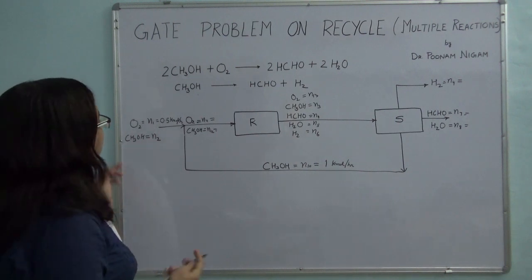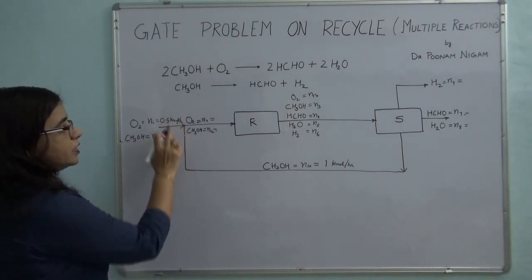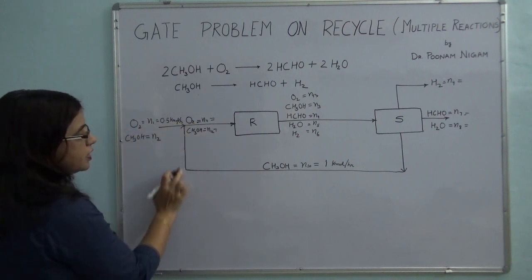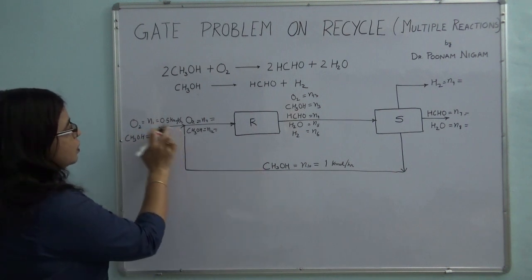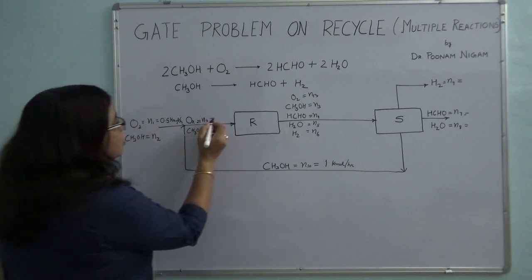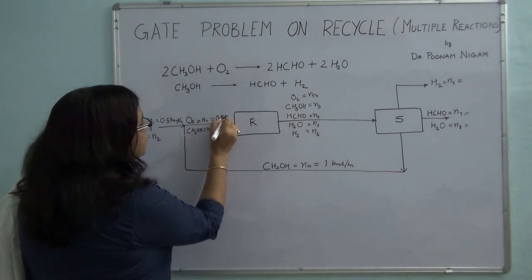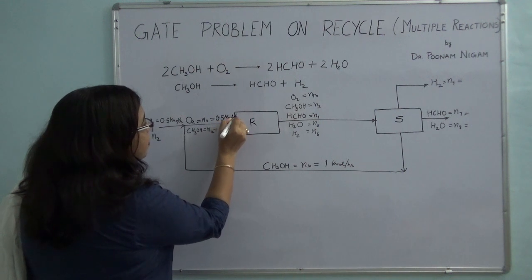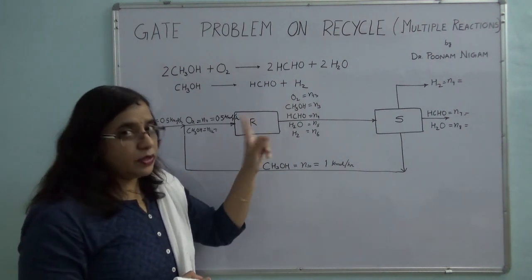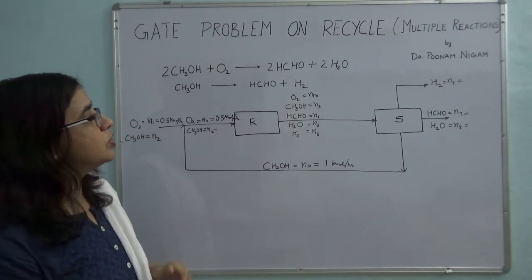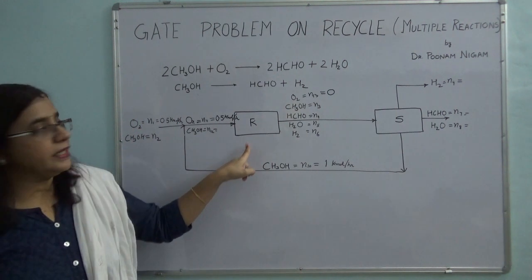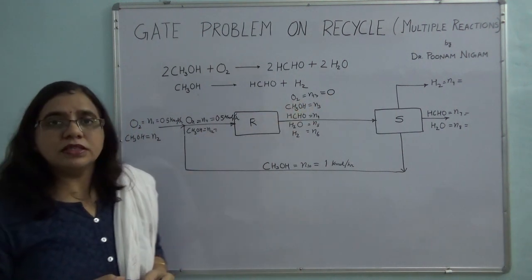Taking the balance at the mixing point: since there is no oxygen in the recycle stream, all the oxygen entering the reactor comes from the fresh feed. So N11 is directly 0.5 kilomoles per hour. Furthermore, it is given that oxygen is completely consumed, so N13 (oxygen out of reactor) equals 0.